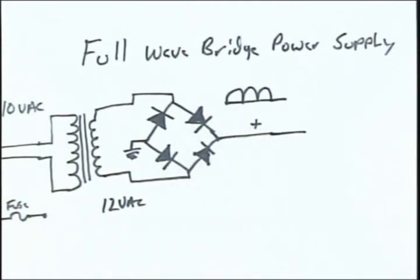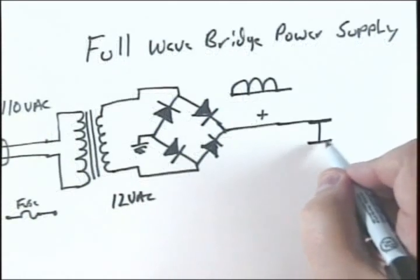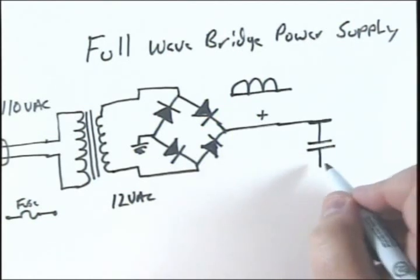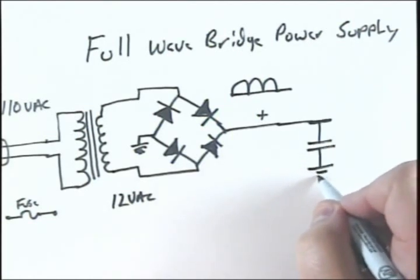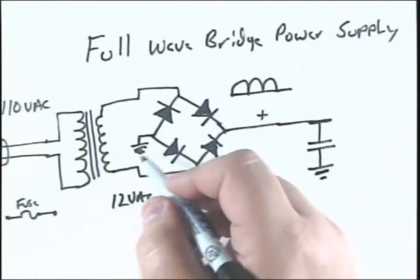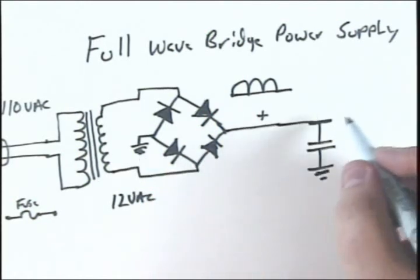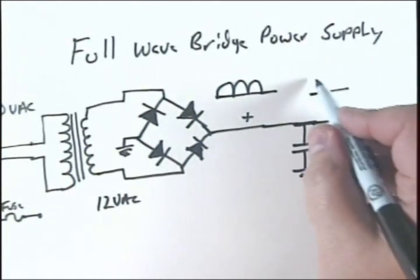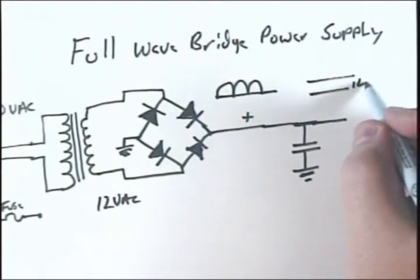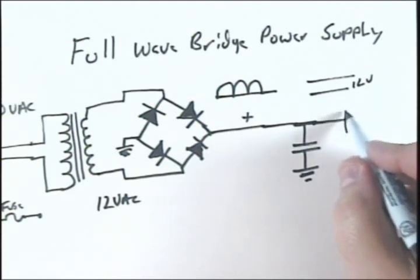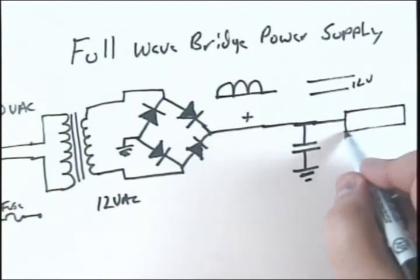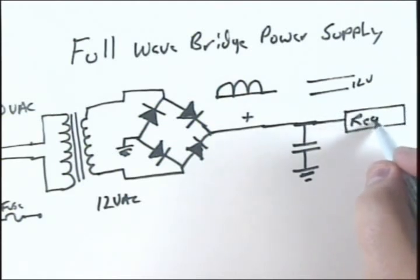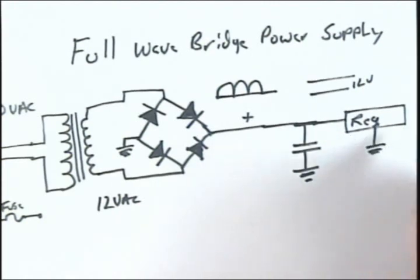We're going to put in a filter to ground. Remember, this ground and this ground are the same thing. Once it's filtered, we have DC, 12 volts. Then of course we can stick in a regulator to make perfect DC.